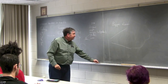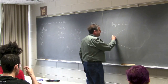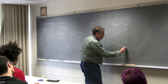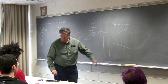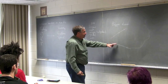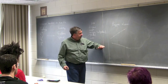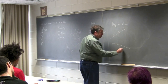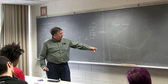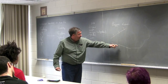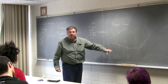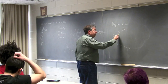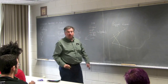Pappus' theorem is the following. Let's choose two lines, and choose a triple of points on each of these two lines. Now let's join them up. We can think of the points as being ordered: one, two, and three on each line. And let's join a point on one line with a point on the other line if the labels are different. So we'll join point one and two, and point two and one. But we won't join points one and one.